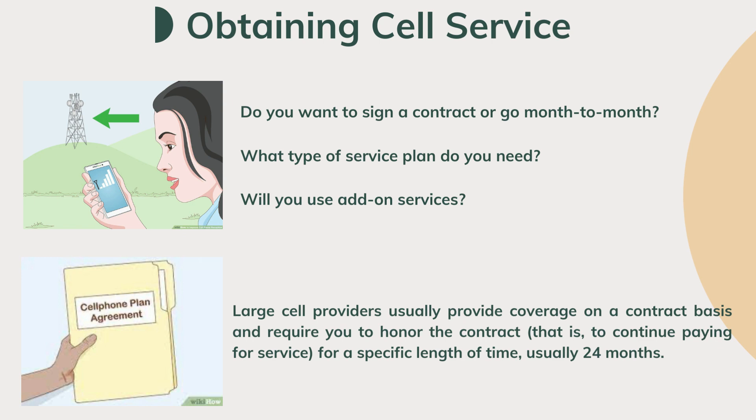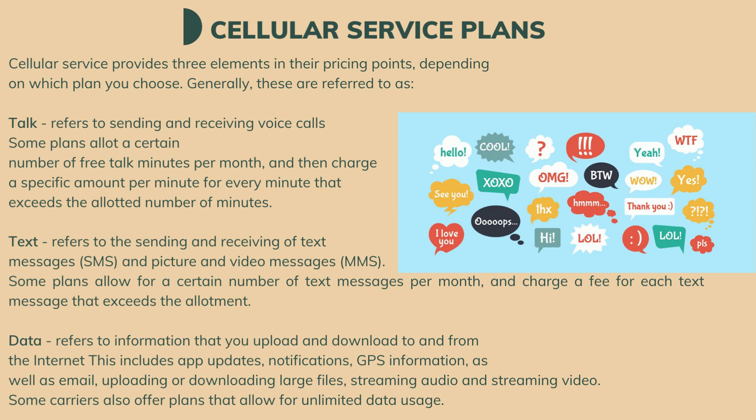Cellular service plans provide three elements in their pricing: talk, text, and data. Talk refers to sending and receiving voice calls — some plans allot a certain number of free talk minutes per month and charge per minute beyond that. Text refers to sending and receiving SMS text messages and MMS picture and video messages — some plans allow a certain number per month and charge for overages.